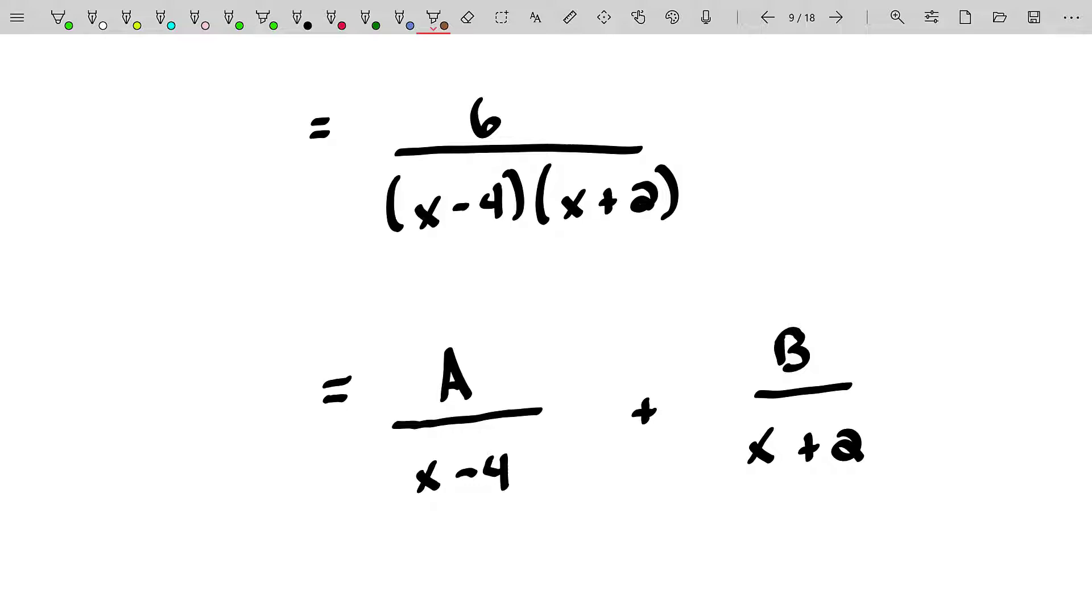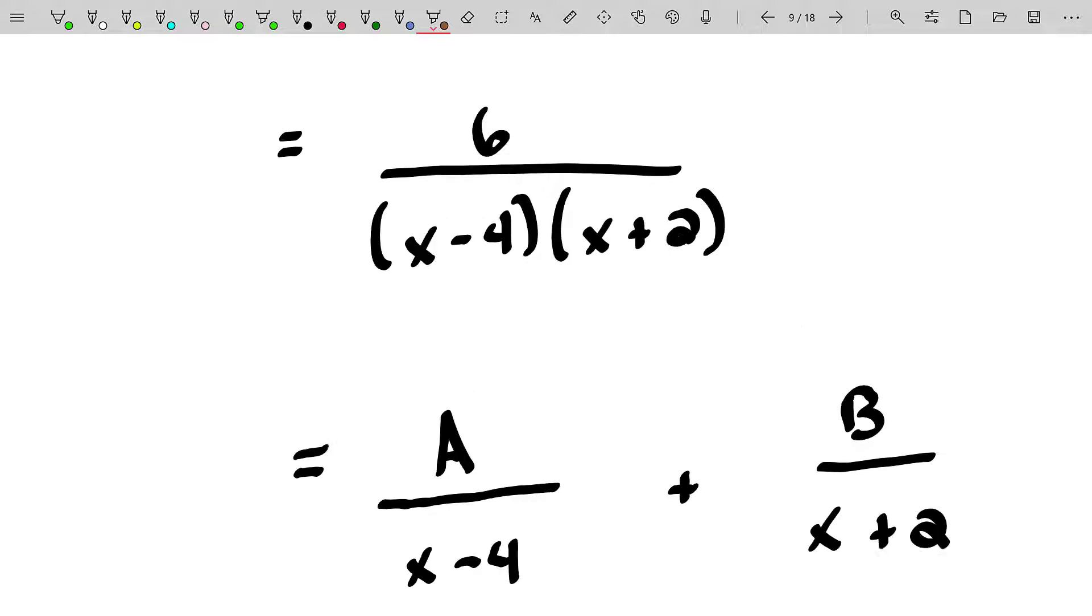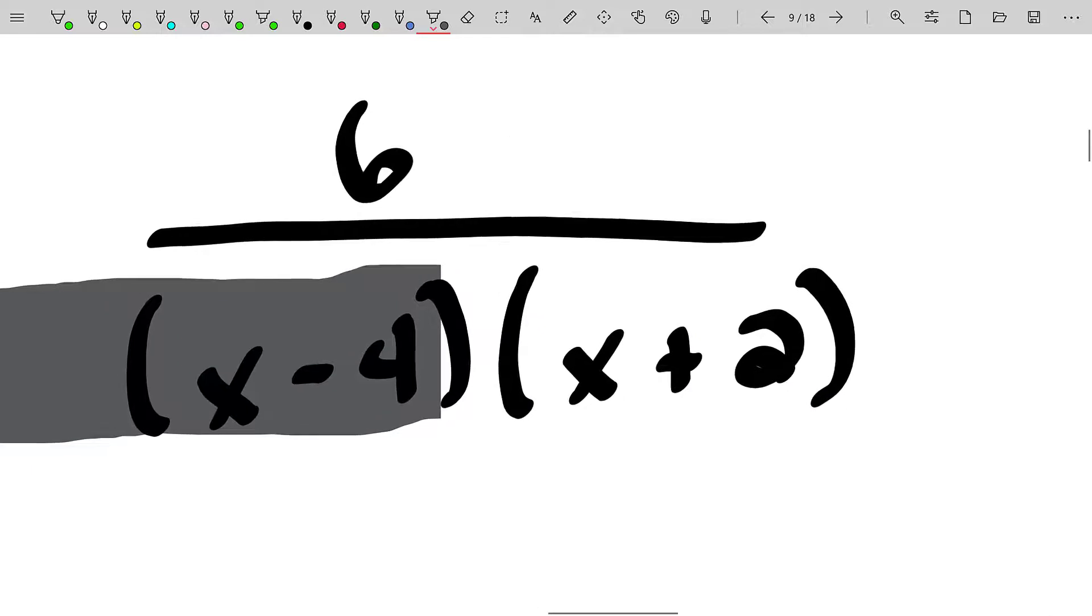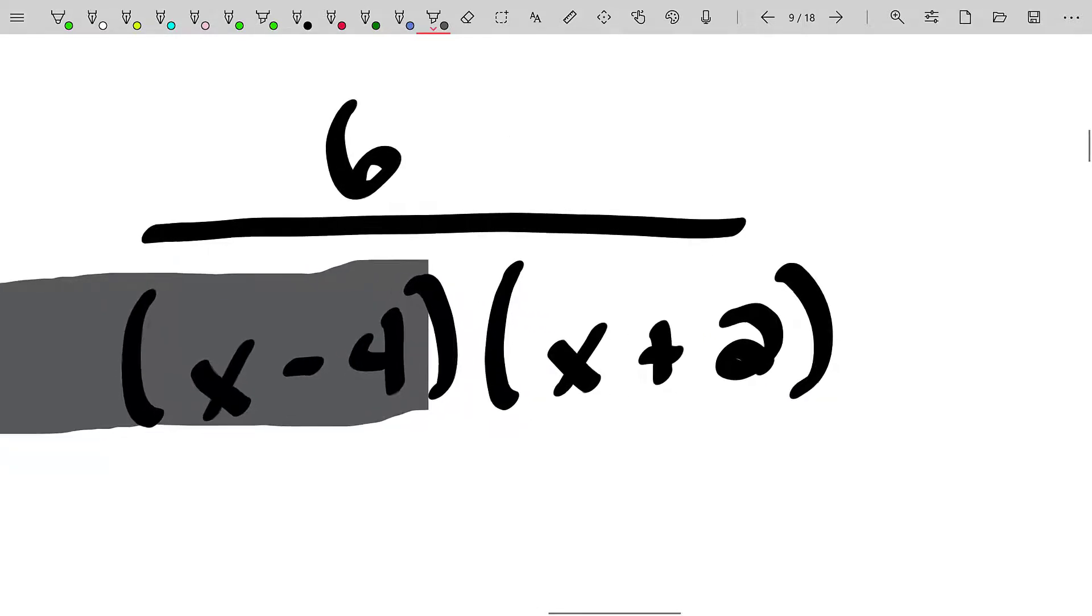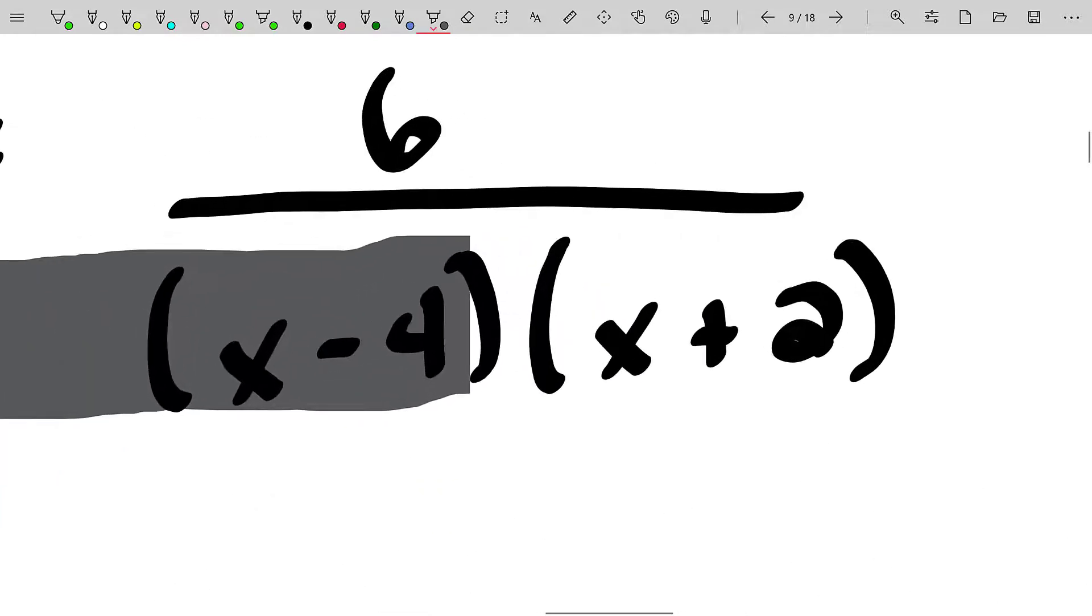For example, go ahead, pause the video and do the partial fraction decomposition the way you learned it. Then come back. Well, I hope you're back now. What we're going to do is go ahead and cover up one of those two factors. And I'm choosing to cover up the X minus 4 just because it's the first factor. And what we're going to do is let X equal 4 in this fraction, the remaining parts of this fraction that are not covered up.